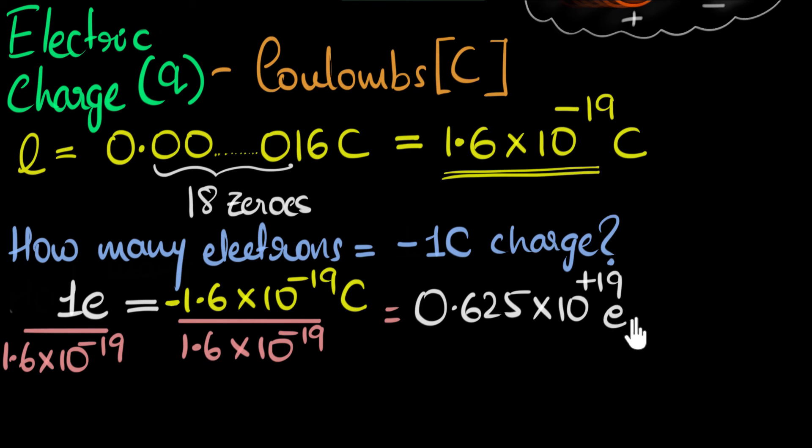And that, so many electrons, is equivalent to now a charge of negative one coulomb. So to get one coulomb worth of charge, we need so many electrons, so many. And of course, we can also write it in proper notation. It'll be 6.25 times 10 to the power 18 electrons.